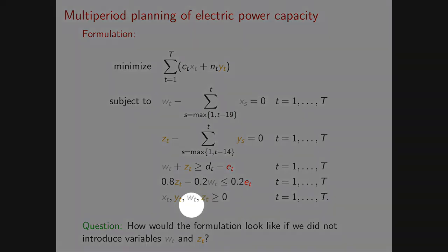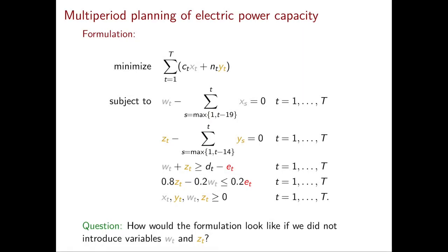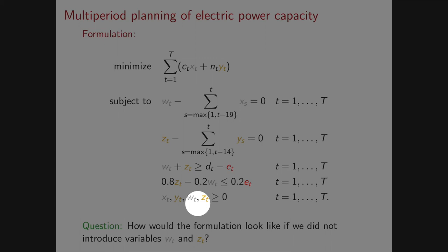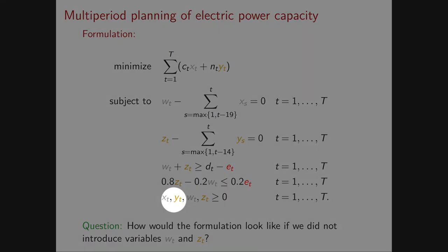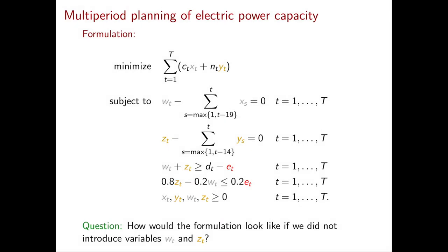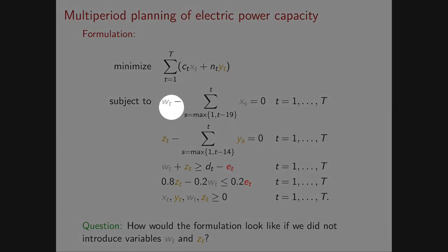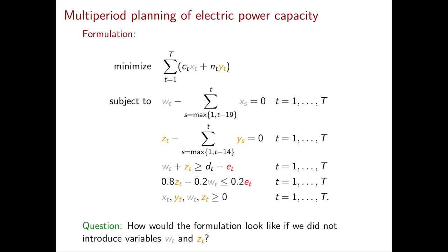Regarding non-negativity: it's actually sufficient to require only x_t ≥ 0 and y_t ≥ 0. The non-negativity of w_t and z_t then follows automatically from the equality constraints, since each w_t is a sum of non-negative x variables and each z_t is a sum of non-negative y variables. This concludes our example on multi-period planning of electric power capacity.